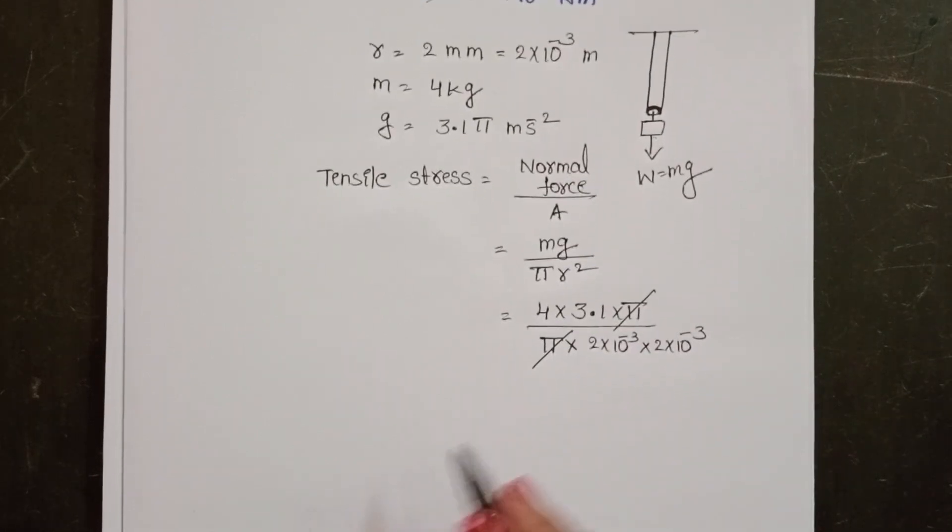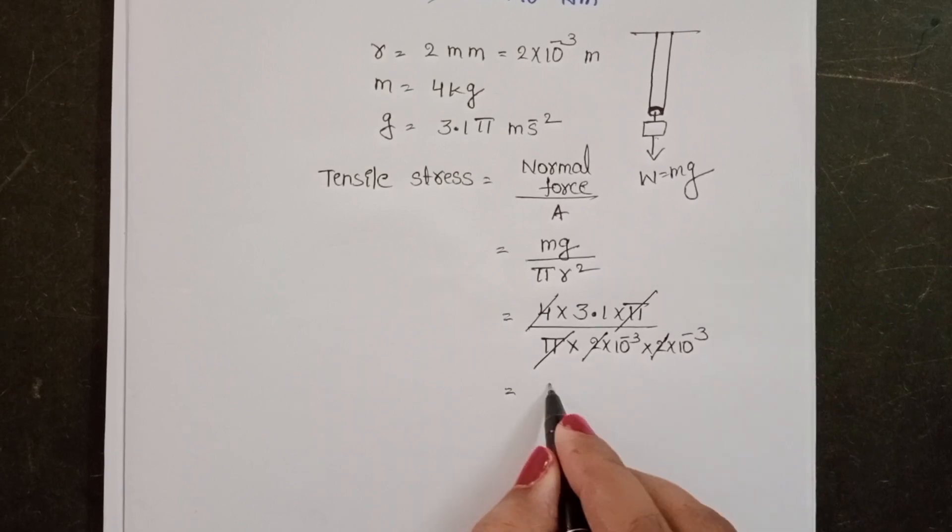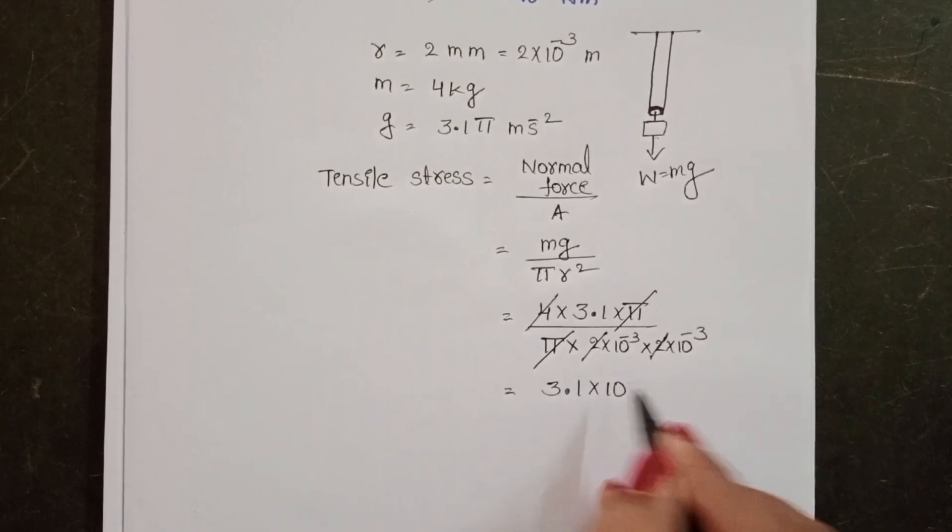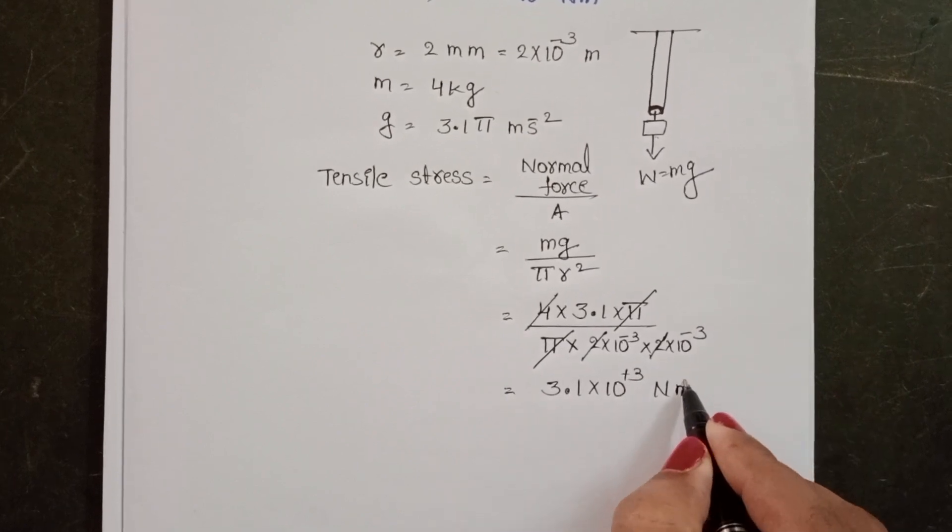Pi pi get cancelled. Here 2 into 2 into 2, this 4 get cancelled. 3.1 into 10 power plus 3 Newton per meter square.